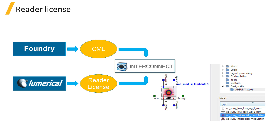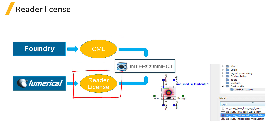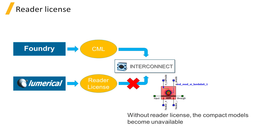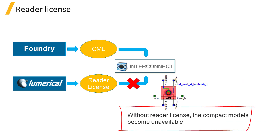In order to protect their IP, foundries typically use the Protected Plus distribution model to publish their CMLs. Using a Protected Plus CML requires a special foundry-specific CML reader license. The circuit designer therefore needs to get the CML from the foundry and the corresponding reader license from Lumerical to use the CML in their circuit design. Without the reader license, the compact models can't be used in any interconnect simulations.